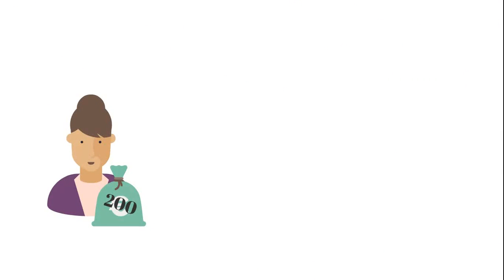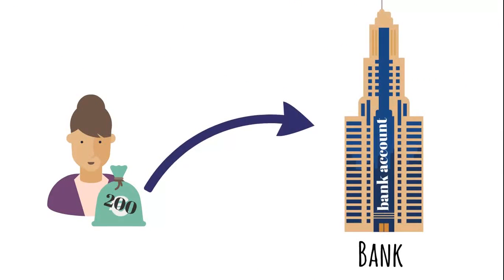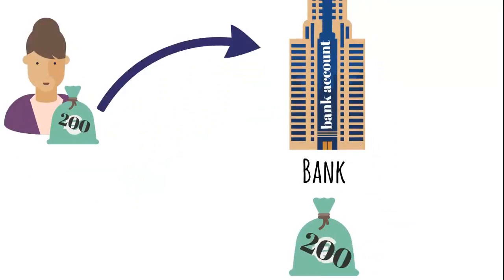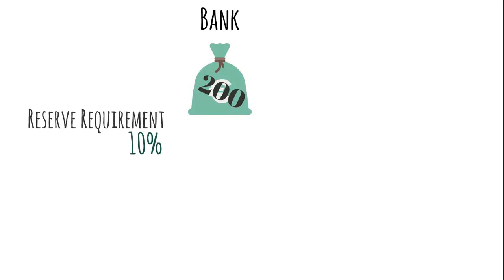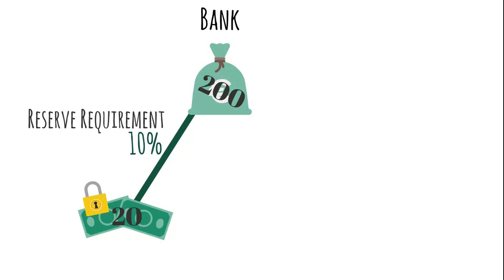Imagine you have 200€ and deposit them in your bank account. Once the bank receives your money, they must divide it into two amounts. The first is the reserve requirement, which is a percentage of the 200€. The reserve requirement rate is imposed by the central bank and in Europe it is currently 10%, which we use in our example. Therefore the reserve requirement is 20€, which must be kept in the bank and cannot be lent.